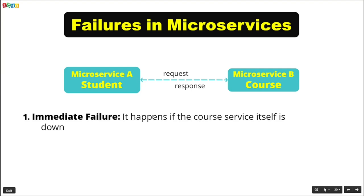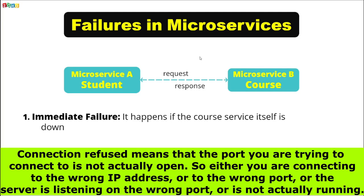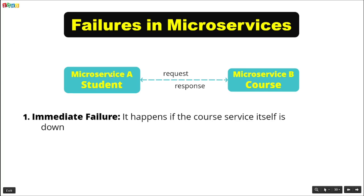The first is immediate failure. Let's say a student service gets a request and makes a call to the course service. Whenever it tries to make a call to the course service, it immediately sends an exception — connection refused. This happens if the course service itself is down. In this case, we can wrap our call to the course service in a try-catch block and whenever we have an IO exception, we will just send a default response back to the user. The thread assigned to this call will be freed immediately as we got an exception.